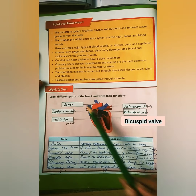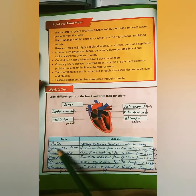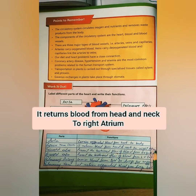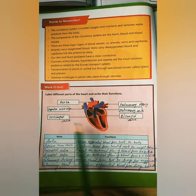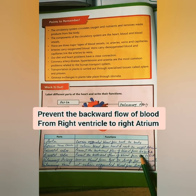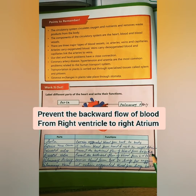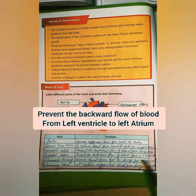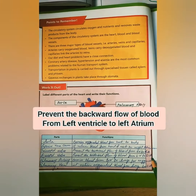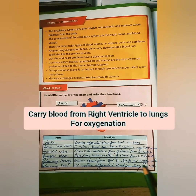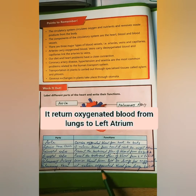Now write the function of each part. The aorta carries oxygenated blood from the heart to the body. The superior vena cava returns blood from the head and neck to the right atrium. The tricuspid valve prevents the backward flow of blood from the right ventricle to the right atrium. The bicuspid valve prevents the backward flow of blood from the left ventricle to the left atrium. The pulmonary artery carries blood from the right ventricle to the lungs for oxygenation. The pulmonary vein returns oxygenated blood from the lungs to the left atrium.